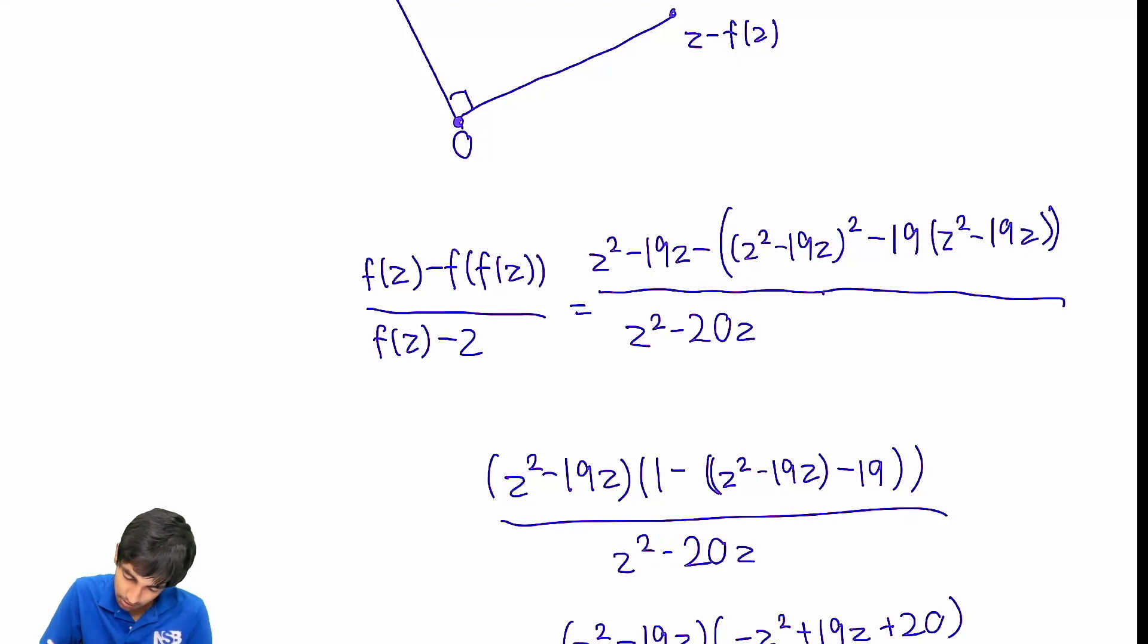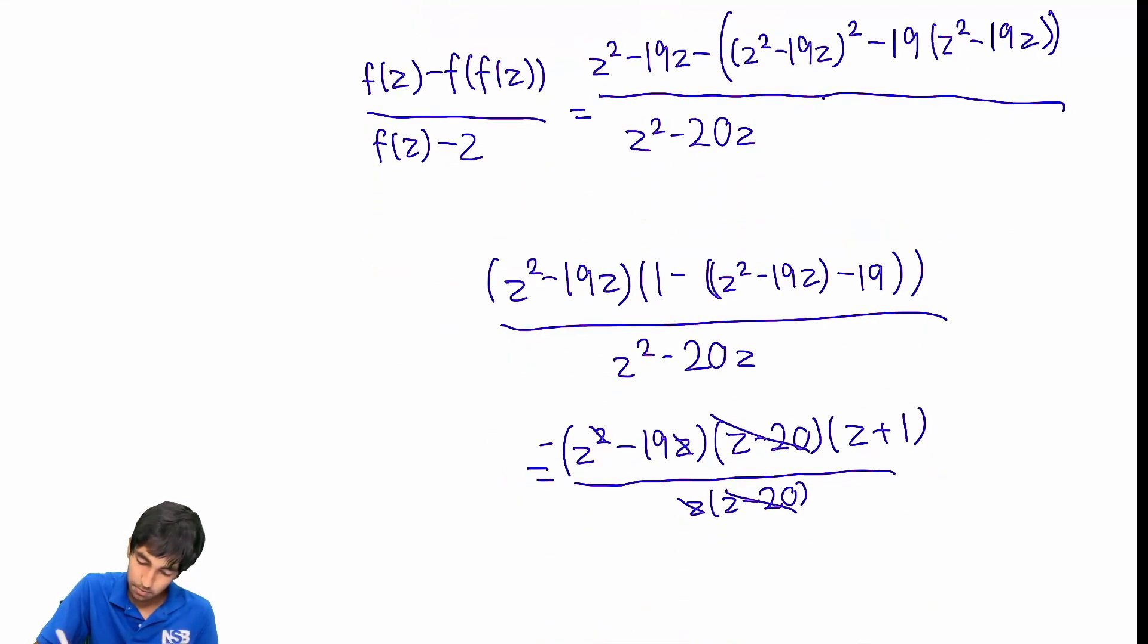And if you're a good observer, you can notice that this can easily be factored, the denominator as well, of course. And this term over here, we can factor out the negative. And now this is just (z minus 20) times (z plus 1). This just cancels straight away. And we can cancel the z here as well. Now let's simplify all of this. We get negative (z minus 19)(z plus 1).